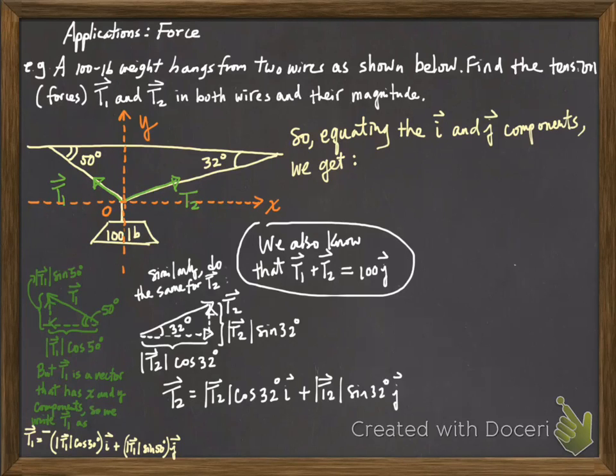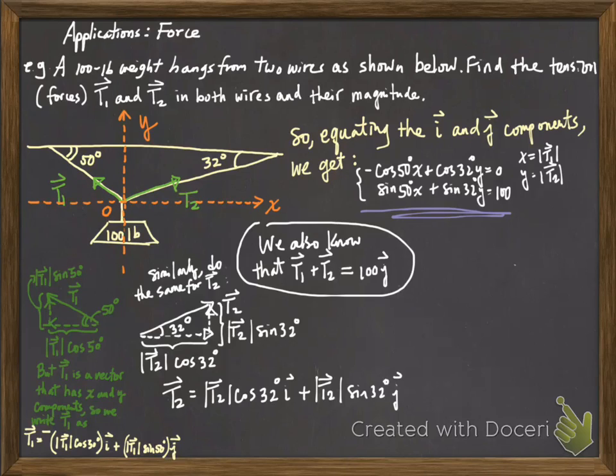The next thing we do then is to use this fact to equate the i and j components of the vectors. In particular, the i-th component of the T1 vector is right here. The i-th component of the T2 vector is right here. If you add these two things together, it should be equal to the i-th component of the right-hand side, but there is no i-th component from this expression of 100j. That's why when we add these two together, it should be equal to 0. Similarly, if we add the j-th component of T1 and the j-th component of T2, it should actually be equal to the 100 on the right-hand side. This is how we get these following linear systems of equation.